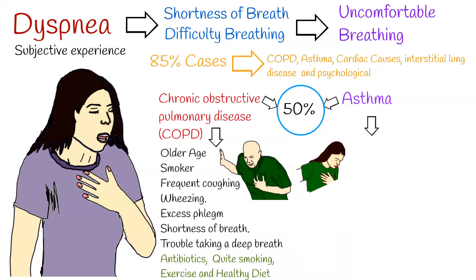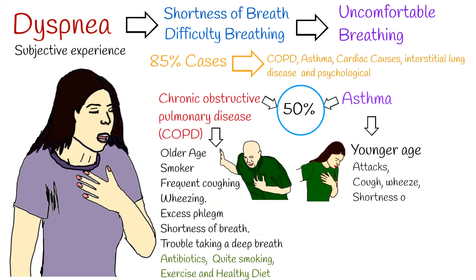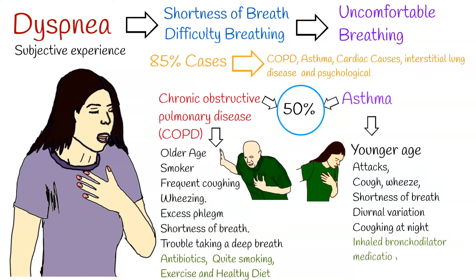Asthma affects both children and adults and is the most common chronic disease among children. It is characterized by asthma attacks with symptoms that can include any combination of cough, wheeze, shortness of breath, and chest tightness. Asthma shows diurnal variation of symptoms, and coughing at night is a common characteristic. Inhaled bronchodilator medication can control asthma symptoms and allow people with asthma to lead a normal, active life. Avoiding asthma triggers can also help reduce symptoms.